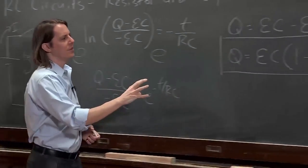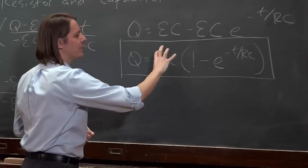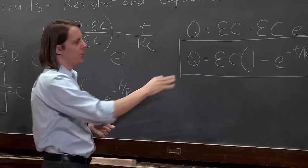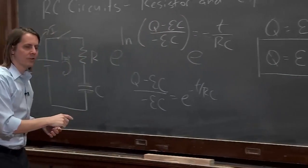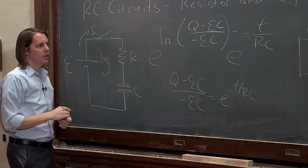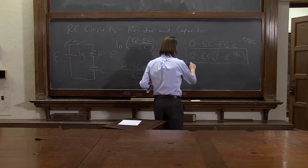You would have that the charge on the wires would just be the EMF times the capacitance. So it does kind of make sense that this is what should be here, because if you look at the function, this is the maximum value. Sometimes you call this Q max. The maximum charge you're going to get on this capacitor is the EMF times the capacitance. It makes more sense, actually, if we plot it. Let's go ahead and plot now.